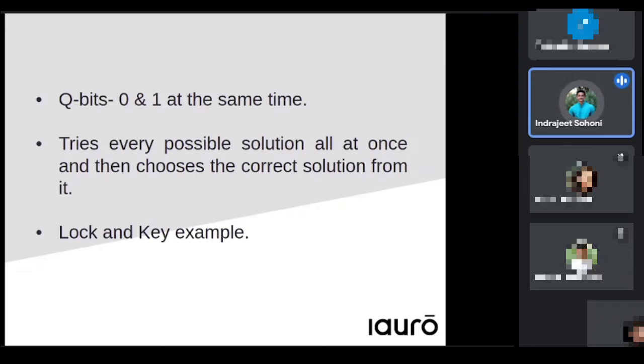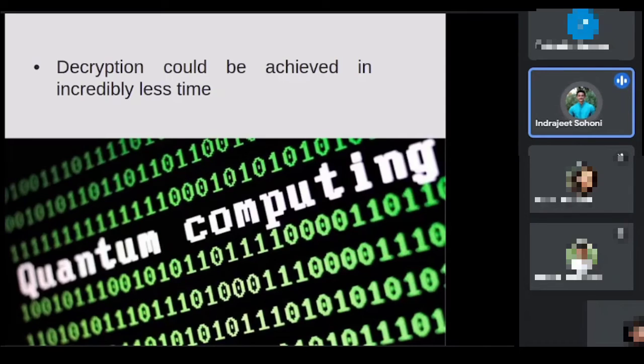Right now a quantum computer only accepts equations as a problem. As long as you can put a mathematical equation together for your question, it will be easier for the quantum computer to solve it. Decryption can be achieved in incredibly less time. If we plugged in 50 supercomputers together to break a 256-bit encryption, it would take nearly 3 times 10 to the 51 years. A quantum computer can do that in six months, possibly even less.